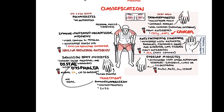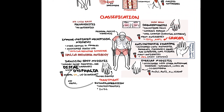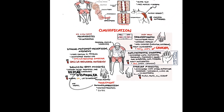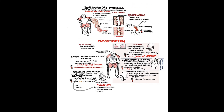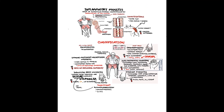In summary, inflammatory myositis is a group of autoimmune conditions whereby the muscles become inflamed, leading to a rise in creatine kinase, AST, and ALT. Inflammatory myositis can now be divided into six phenotypes: dermatomyositis, polymyositis, antisynthetase syndrome, overlap myositis, necrotizing autoimmune myopathy, and inclusion body myositis.